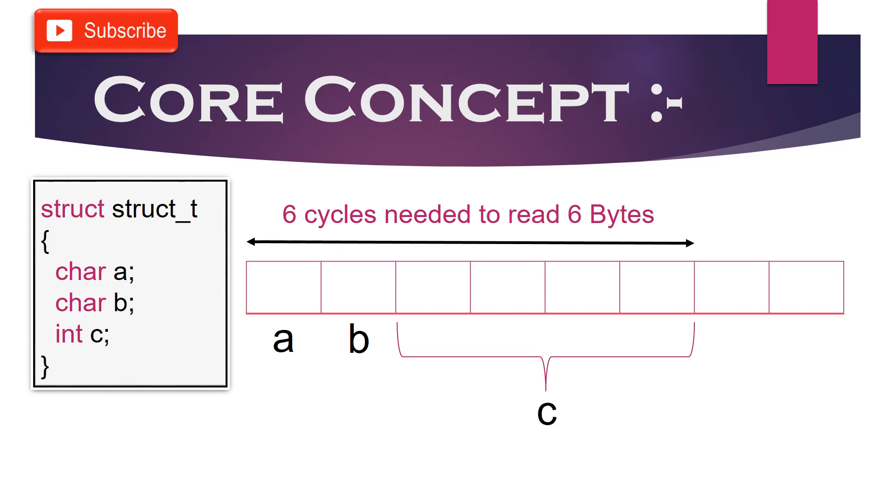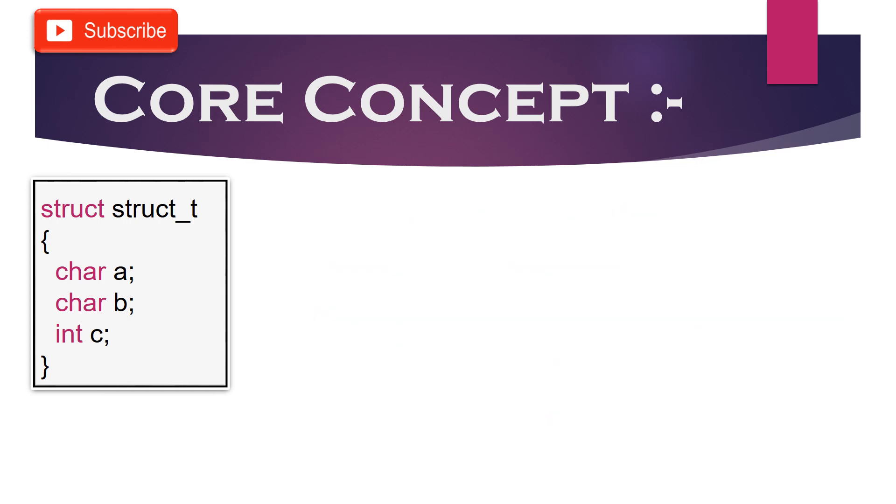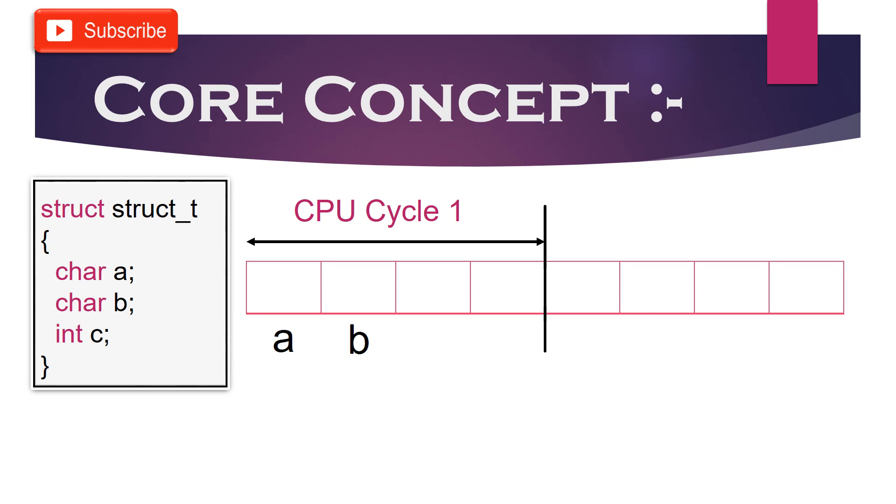So if processor is reading one byte at a time, then our previous answer would be correct. Processor needs 6 CPU cycles here to read each byte one by one. But since we are considering a 32-bit architecture here which is capable of reading 4 bytes at a time, in this case there is no problem to read character members A and B. They both can be read in one CPU cycle.